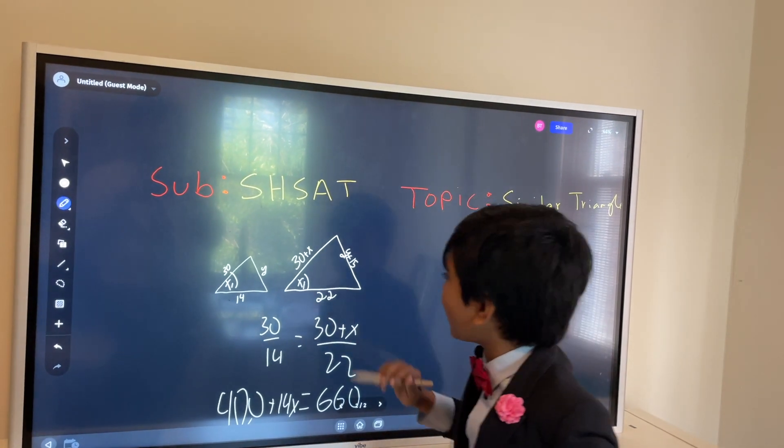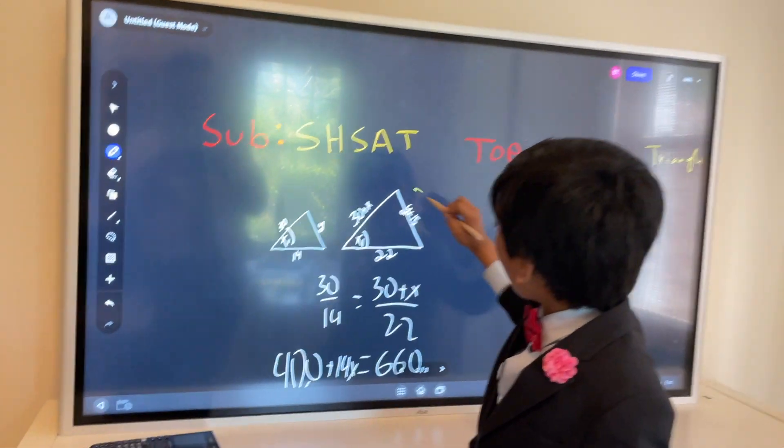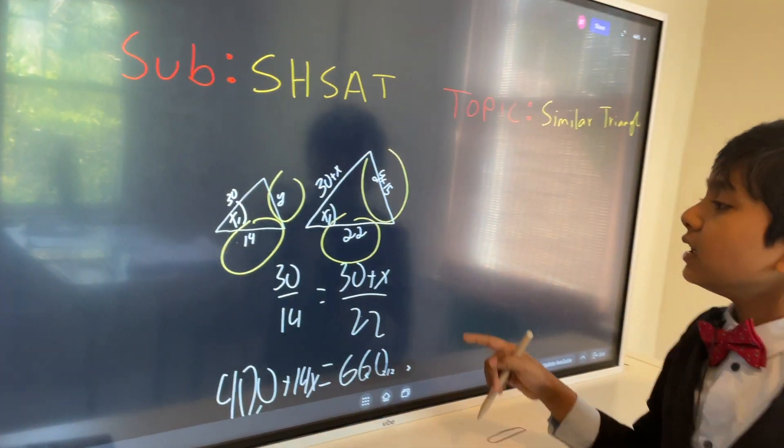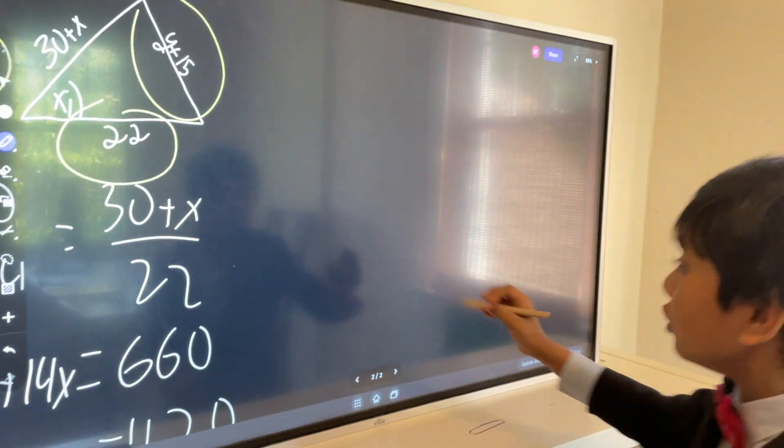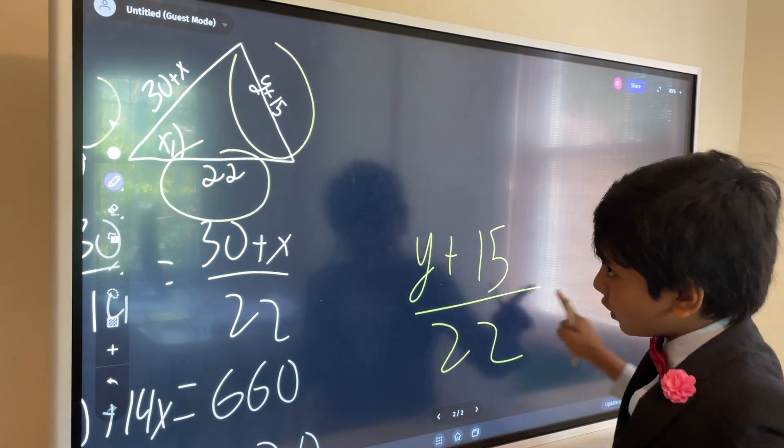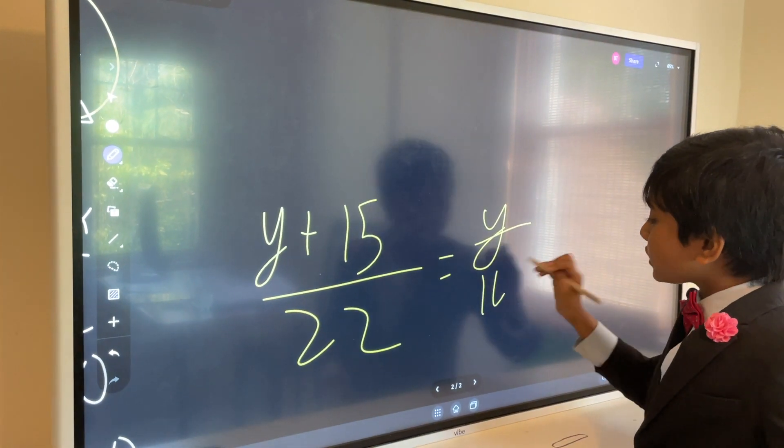Y plus 15 is to 22 as y is to 14. Alright! Now the thing is that y plus 15 is to 22 as y is to 14. So what is the thing about this? Well, we can put them in a proportion. So, y plus 15 over 22 equals y over 14. Alright!